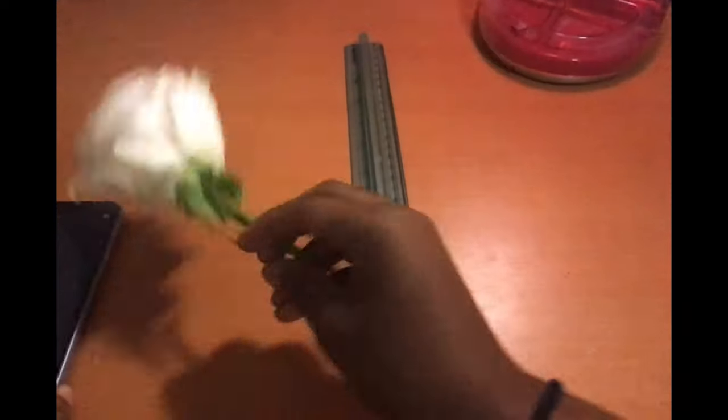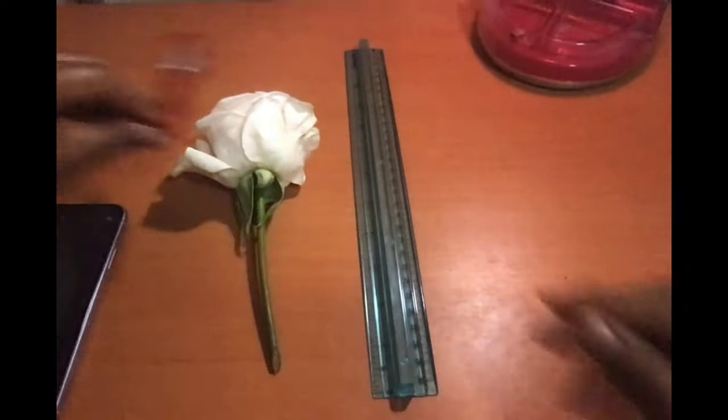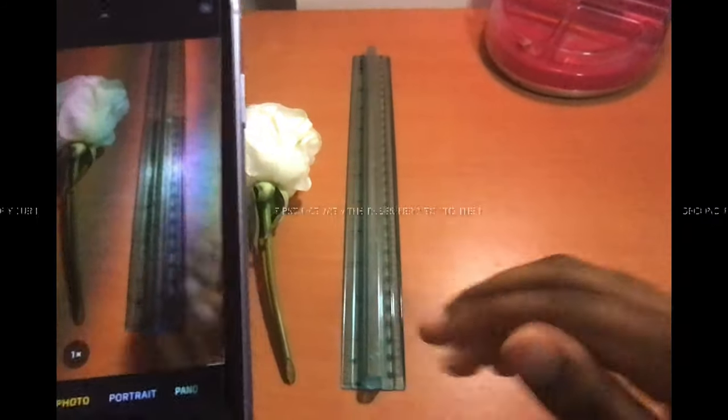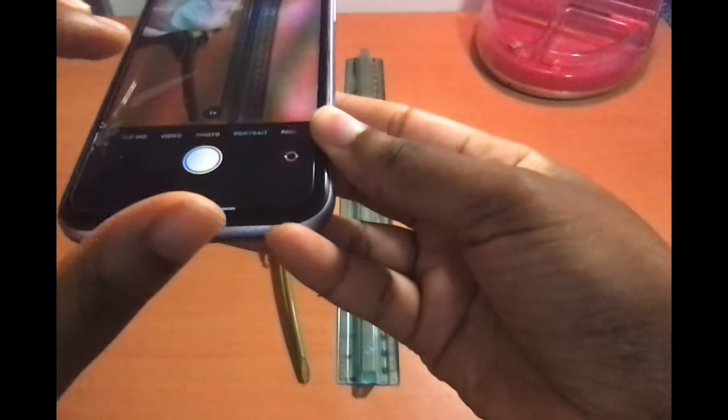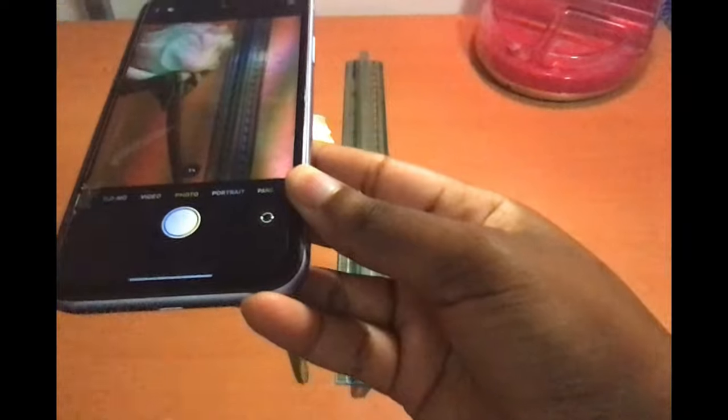Then, you can have an object that you want to take a picture of and your ruler right next to it. For my experiment, I chose to use the flower. You can use anything that you have lying around or something that you simply just want to take a picture of.